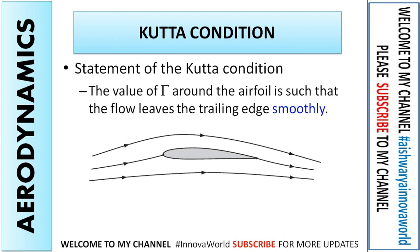The Kutta conditions have three conditions. The first one is that the value of circulation along the airfoil is such that the flow leaves the trailing edge smoothly — as you can see in the airfoil figure, how the flow is leaving from the trailing edge.